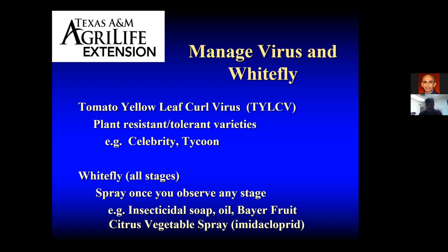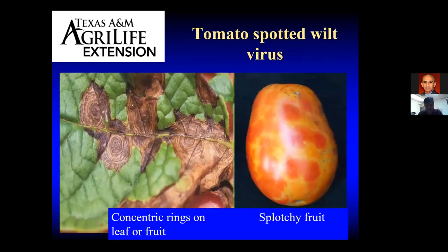Another problem that comes up in tomatoes — not so much in South Texas but in many parts of East Texas and the southeastern United States — is tomato spotted wilt virus. This virus is also insect-transmitted. The photo on the left shows very concentric rings, almost like a target. You can sometimes even see this symptom on fruits — I've seen it on watermelons and on papayas.